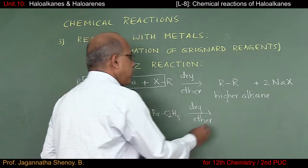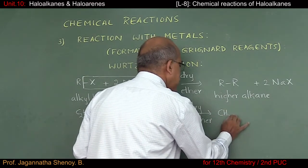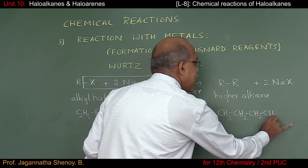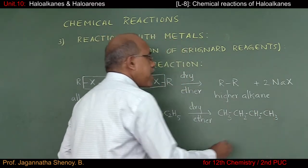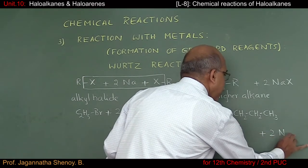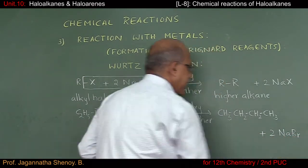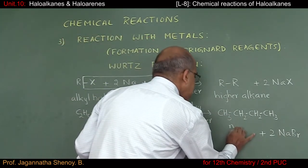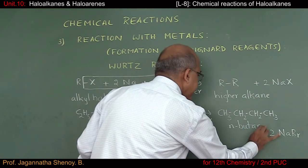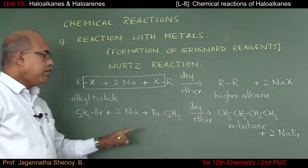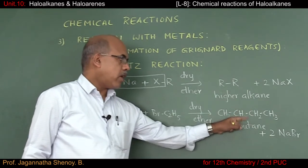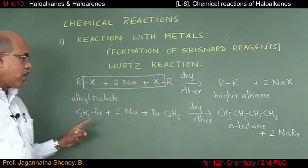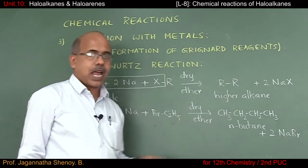For example, if I start from ethyl bromide C2H5Br and carry out the Wurtz reaction, the product obtained is n-butane: CH3-CH2-CH2-CH3. The byproduct formed is two moles of sodium bromide. Since the number of carbon atoms in the final product is two times the number of carbon atoms in the starting alkyl halide, we use the word 'higher alkane.'